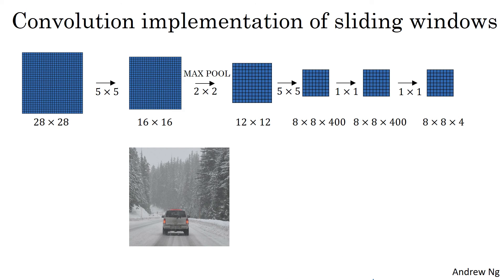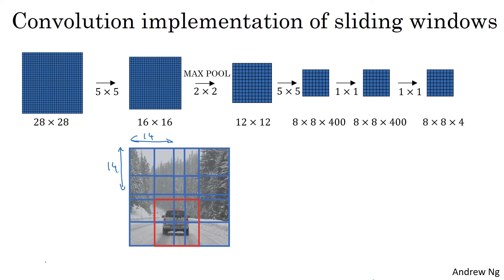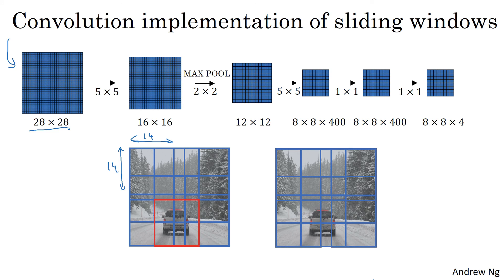To recap: previously, to implement sliding windows you would crop out a 14 by 14 region and run it through a ConvNet, then repeat sequentially for each region. Now, with the convolutional implementation, instead of doing it sequentially you can run the entire image — say 28 by 28 — through one forward pass of the ConvNet and make all predictions at the same time, hopefully recognizing the position of the car. That's how you implement sliding windows convolutionally, making the whole thing much more efficient. However, this algorithm still has one weakness: the position of the bounding boxes won't be very accurate. The next video will address how to fix that problem.